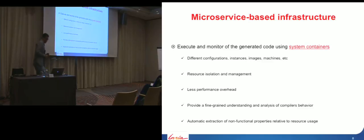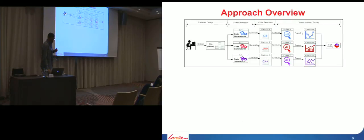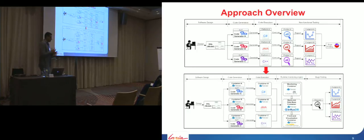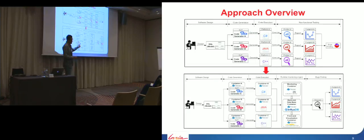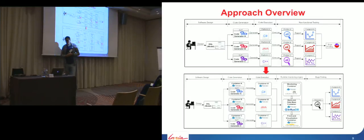We want to move from the earlier architecture to this new one. For each code generator we will have a container configured to generate the target code. The code generator maintainer can install all the dependencies, libraries, or compilers needed to generate the code. Once we generate the executable, we run it within these isolated containers. During code execution, we add a runtime monitoring engine layer to gather information at runtime for the different containers we are running.